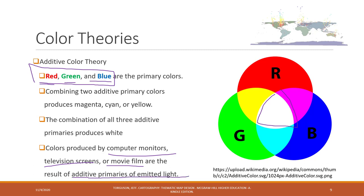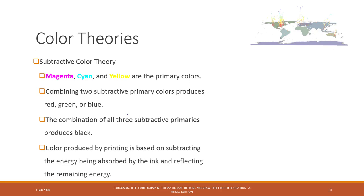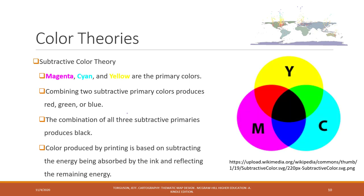The second is the subtractive color theory, which has three primary colors: magenta, cyan, and yellow. All three together generate black. This color theory is used in printers — that's why when you buy ink, there are typically magenta, cyan, and yellow, and sometimes also a black ink cartridge because black is used most frequently.